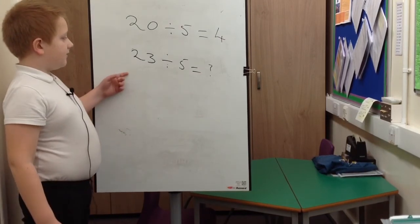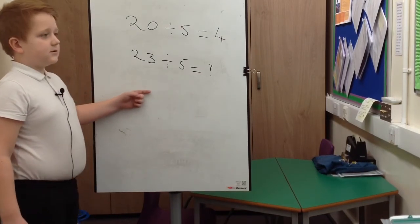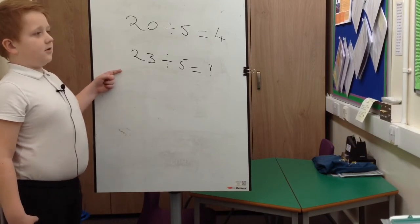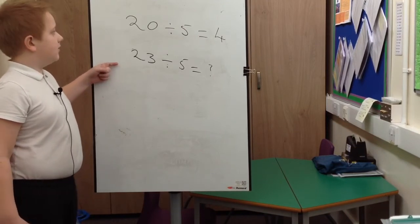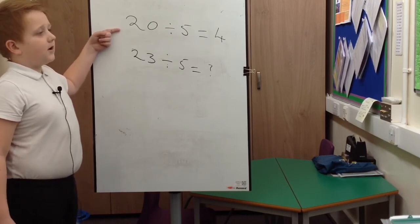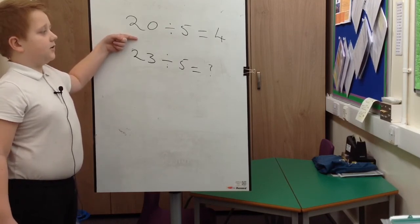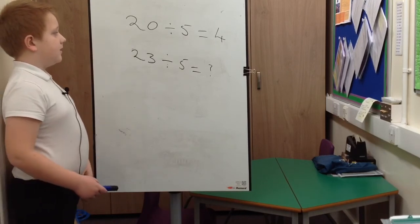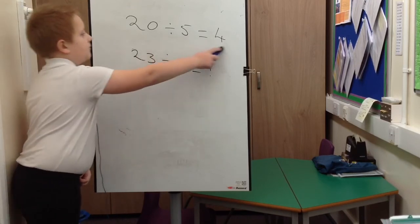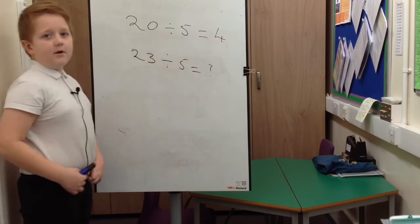So 23 divided by 5, there won't be an answer because 23 is not in the 5 times table, but the nearest number under it that is in the 5 times table is 20, and 20 divided by 5 equals 4. So the remainder will be 3. You just get that number and put it in, and then it will be the remainder.